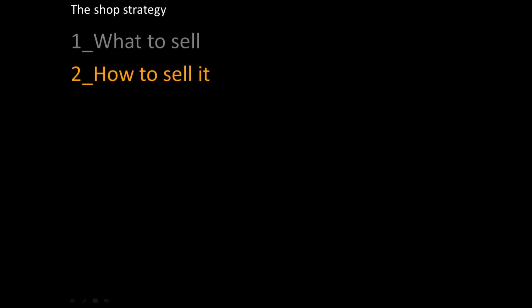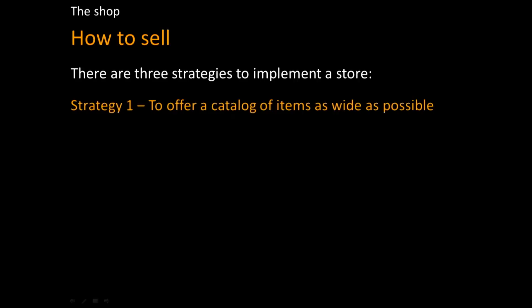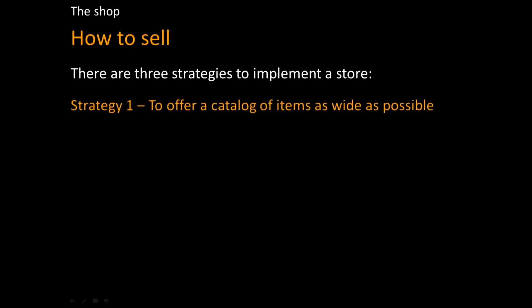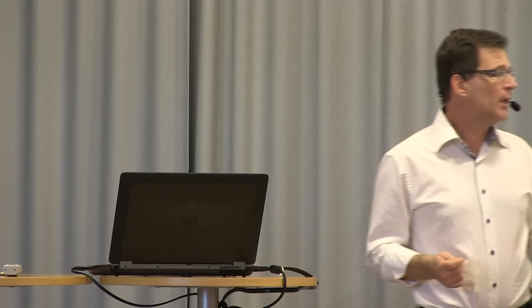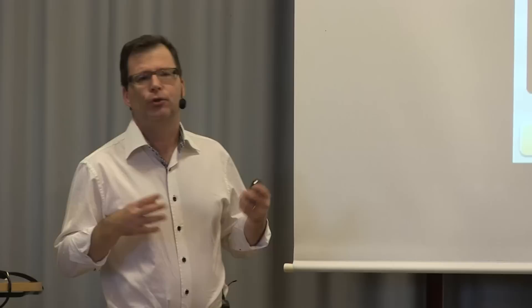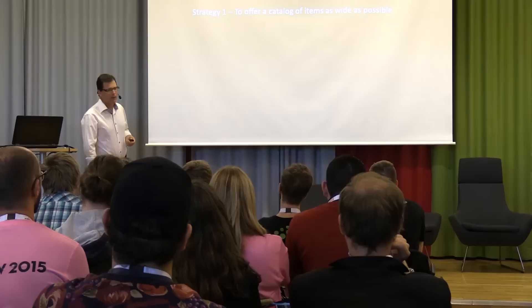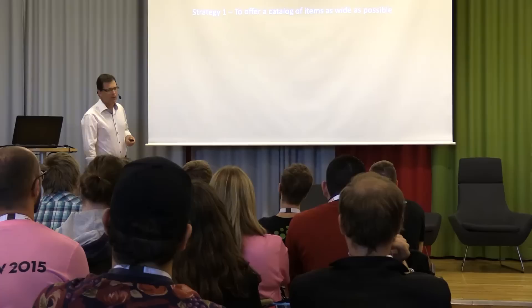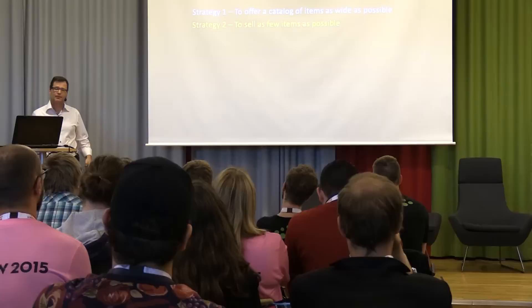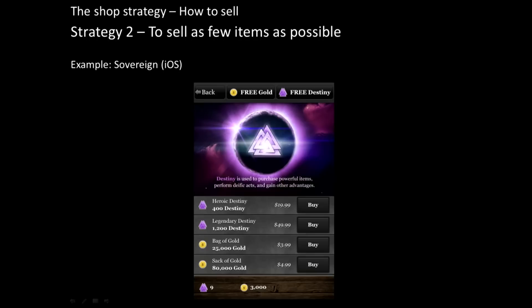For how to sell it, you've got three strategies. The first is to offer a catalog of items as wide as possible — an example from MyBrute where you see plenty of things you can buy, like a toy store with hundreds of items across categories. The second category is the reverse: to sell as few items as possible. Like Rage of Bahamut with only four items, or Sovereign with only two. The benefit of this technique is that it makes the game much easier to understand, though it has some handicaps as well.